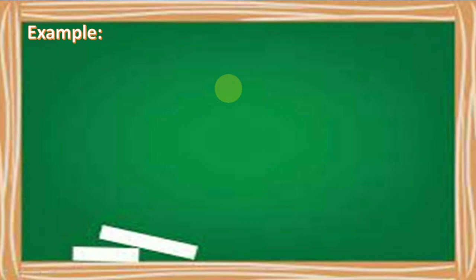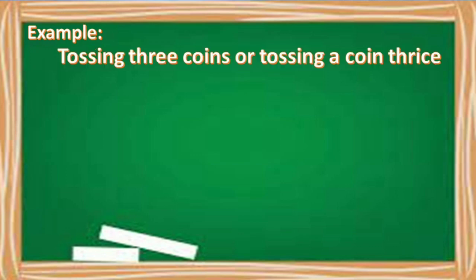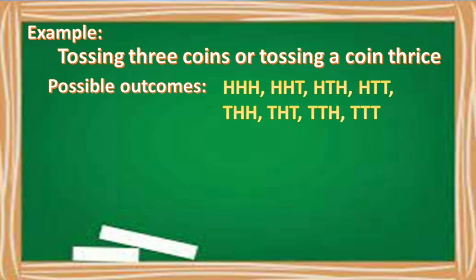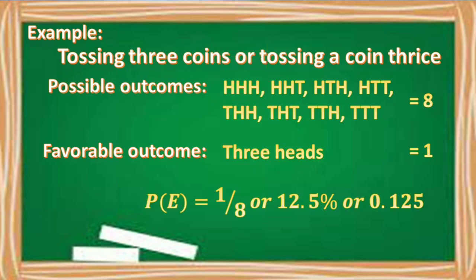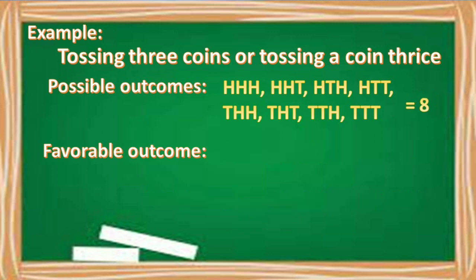How about if we are tossing three coins? The possible outcomes are: head-head-head, head-head-tail, head-tail-head, head-tail-tail, tail-head-head, tail-head-tail, tail-tail-head, and tail-tail-tail. So we have eight possible outcomes. If our assigned favorable outcome is three heads, we have only one (head-head-head) outcome. Therefore, the number of favorable outcomes is 1. Thus, the probability of an event is equal to 1/8, or 12.5%, or 0.125.